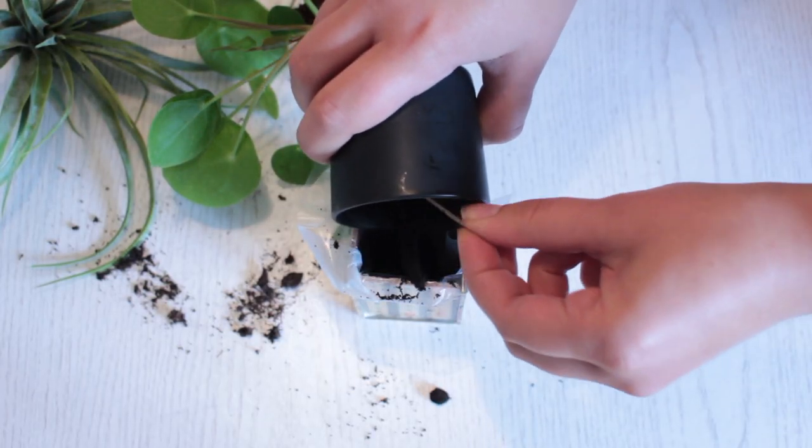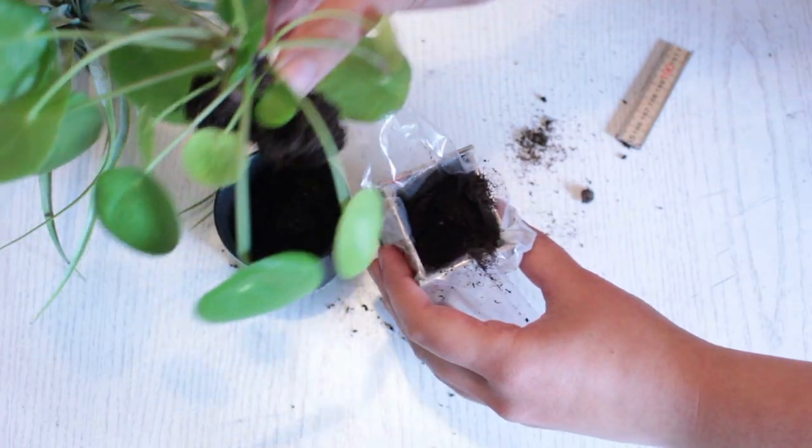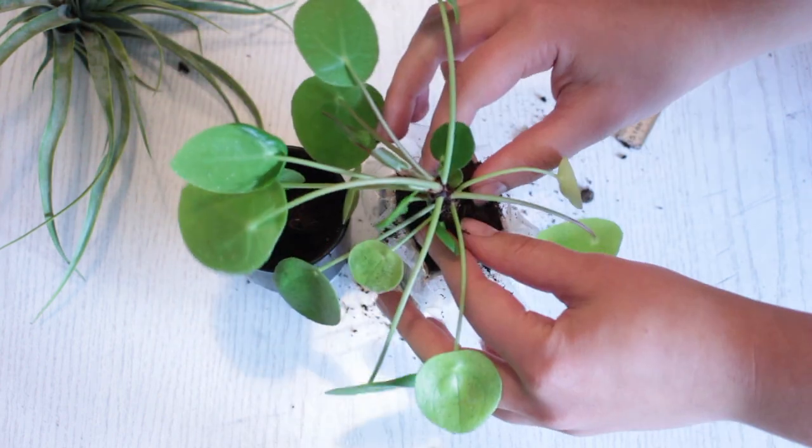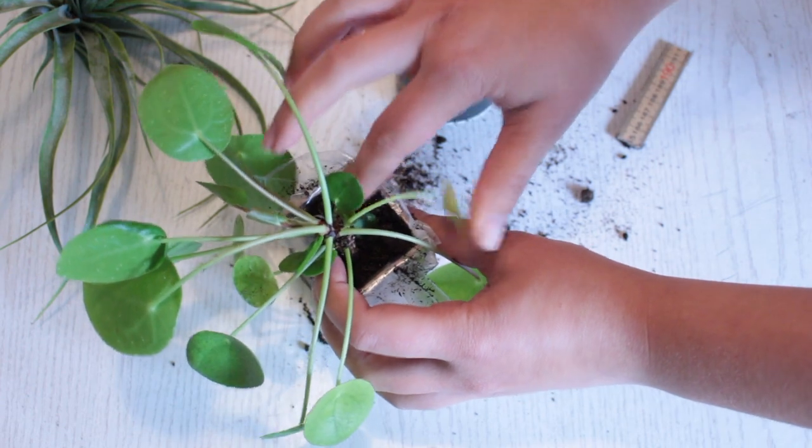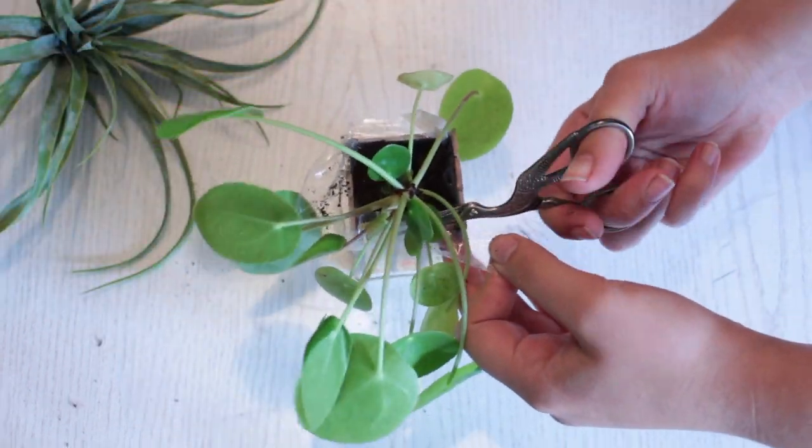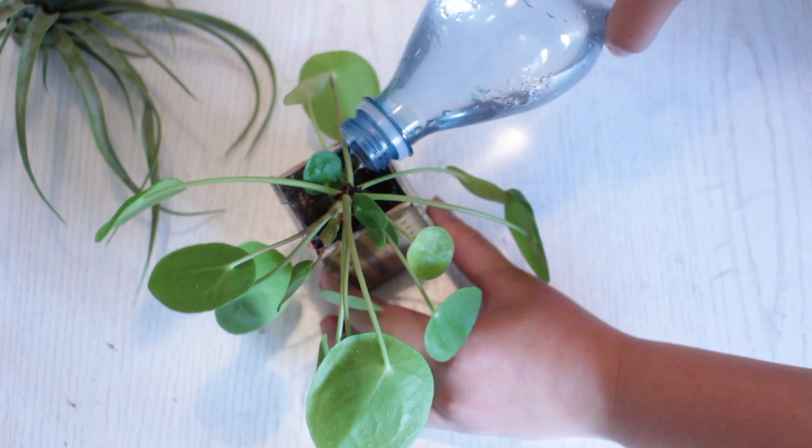Fill the planter up halfway with soil before adding the plant. Gently push the plant into the planter and fill it up with more soil. Cut off any excess pieces of the plastic bag and water your plant.